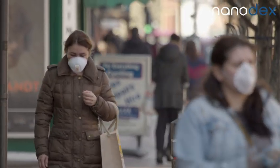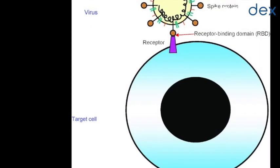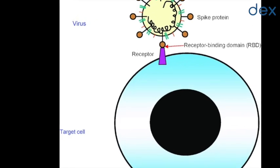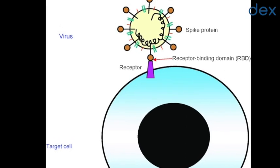Viruses like SARS-CoV-2, which causes COVID-19, rely on spike proteins on their surfaces to infect host cells. The spike proteins bind to receptors on the surface of the target cells, allowing the virus to enter.